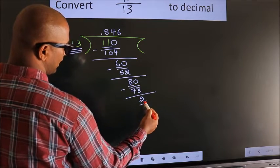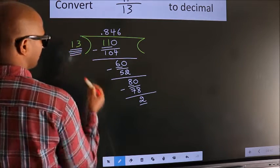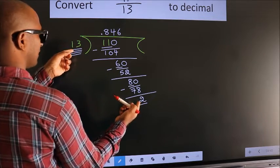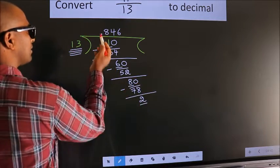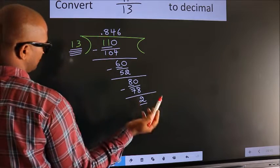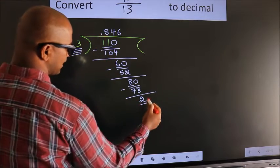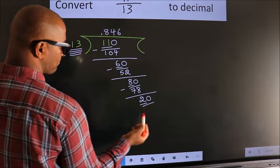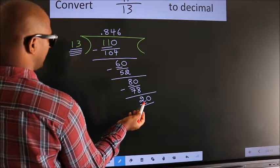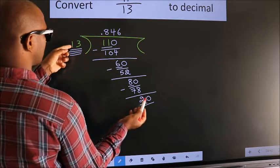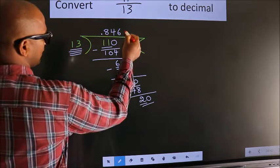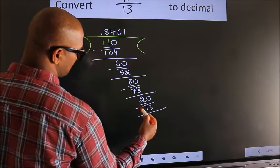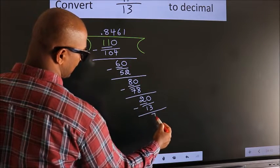Here we have 2 and here 13. 2 is smaller than 13, and we already have the decimal, so we can directly take 0 — so 20. A number close to 20 in the 13 table is 13 ones, 13. Now we subtract and we get 7.